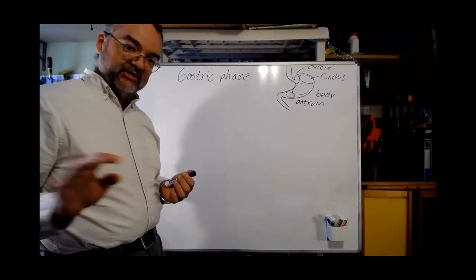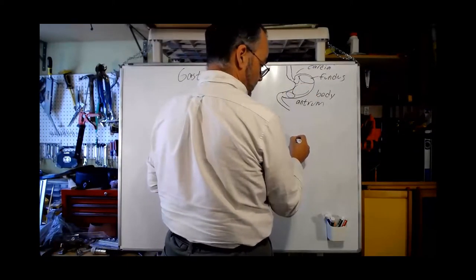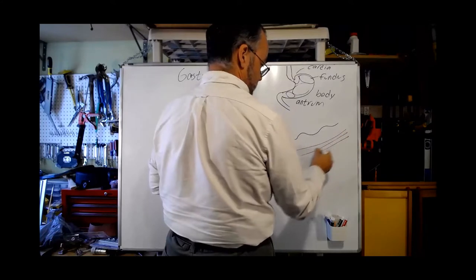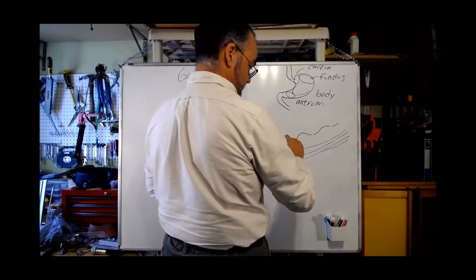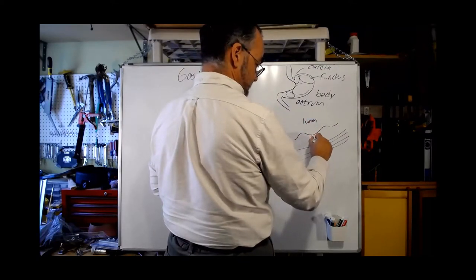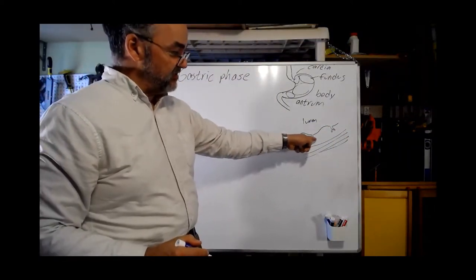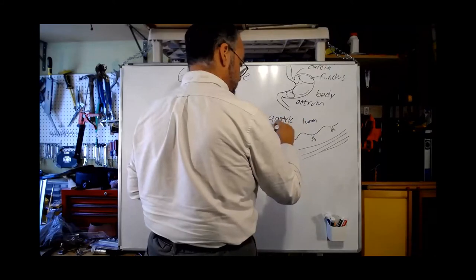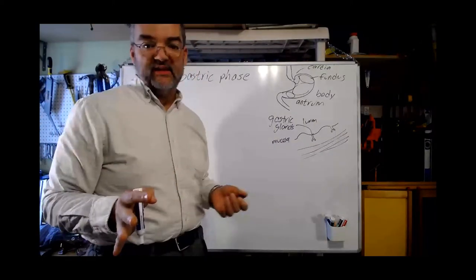One other thing we need to talk about before we talk about the details of the gastric phase is the idea of the gastric glands. So if we took a very close-up view of the wall of the stomach, it's divided up into a bunch of layers, including muscular layers. But here, in this layer called the mucosa, which is the innermost part, in here is the lumen of the stomach. We have these little pits, the gastric pits, and the cells down here in the bottom of the gastric pits are what are known as gastric glands.